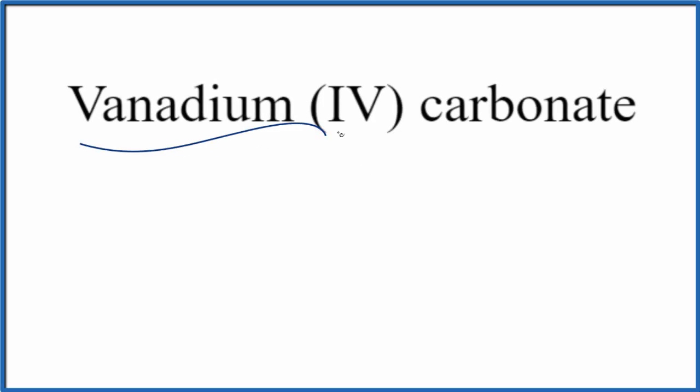To write the formula for vanadium (IV) carbonate, let's first write the element symbol for vanadium, that's V. The Roman numeral IV means it'll be 4+. Vanadium is a transition metal.